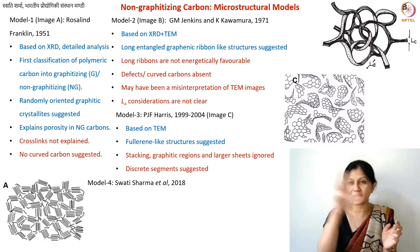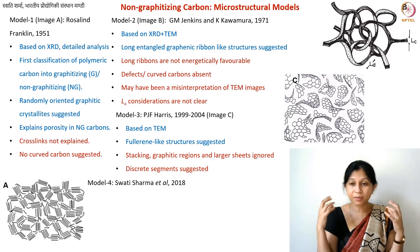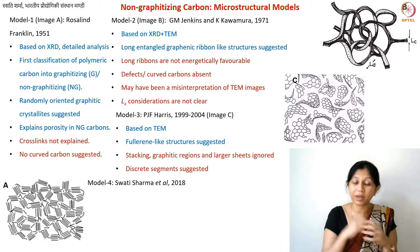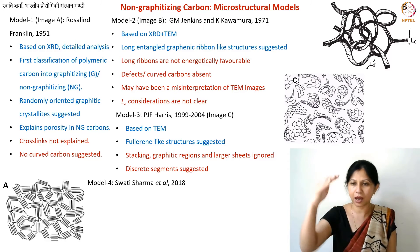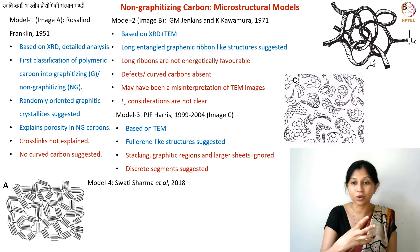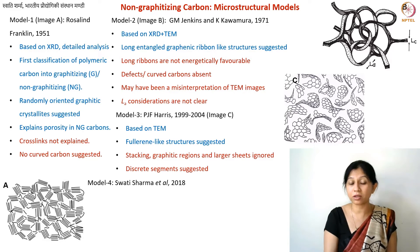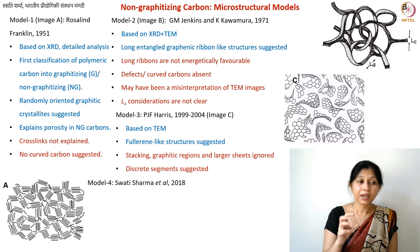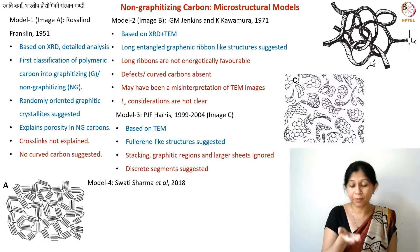So there are three models, none of which can explain everything about non-graphitizing carbons, but each has advantages and tells you certain things. You can see how understanding developed over time and how TEM became more widely used for microstructural investigations. I am also going to explain another model which my research group previously proposed. This was based on in-situ TEM — meaning we observed a polymer carbonizing while continuously taking pictures, tracking the conversion from polymer to carbon.